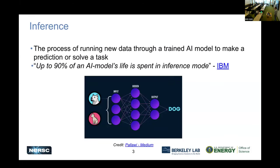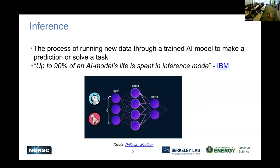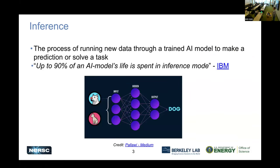Peter was talking a lot about deep learning and training, but inference is a really important part of the ML/AI workflow. Inference is where you take your trained model and use it to predict something. IBM claims that 90% of an AI's life is spent in inference mode — it may take hours to train but you run a model for years — so it's really important that it runs efficiently. This simple demo is just an image of a dog put into a neural network, and out comes a classification. That's the inference part.